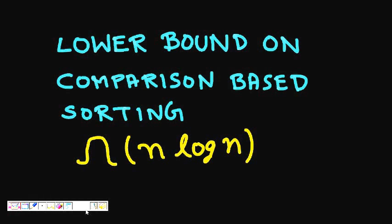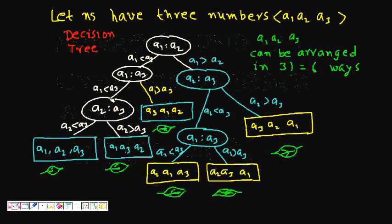In this lecture, we will learn about the lower bound on sorting algorithms which are comparison based. We will try to find the lower bound on the number of comparisons needed to sort an array of size n. This is quite important because it gives the lower bound that your sorting algorithm will at least take this amount of time.